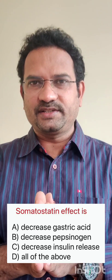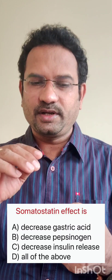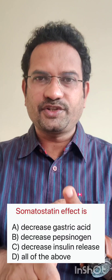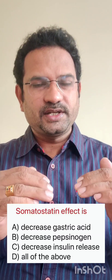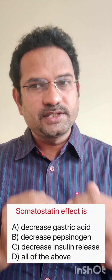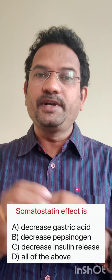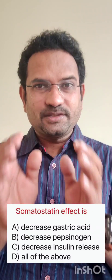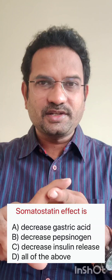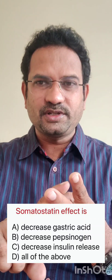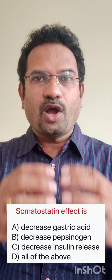The next question: somatostatin effect is? Somatostatin is a hormone released in the intestinal tract, in the pancreas, and in the gastrointestinal mucosa. Options are: decreased gastric acid, decreased pepsinogen, decreased insulin release, all of the above. Somatostatin is an inhibitory hormone — 'stasis' means to stop. It decreases gastric acid release, pepsinogen release, and insulin as well as glucagon release. Hence the option is all of the above.